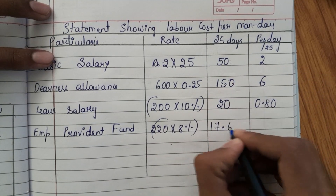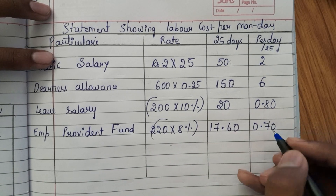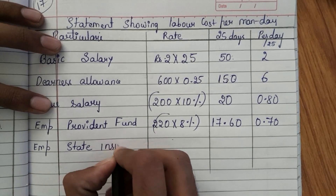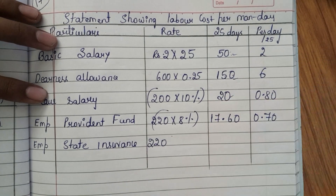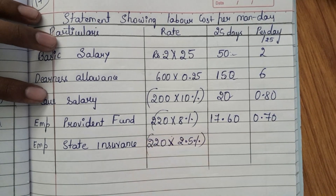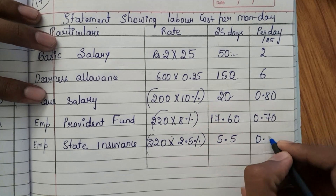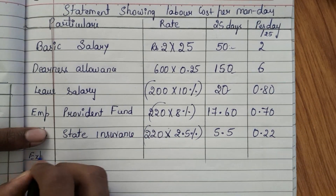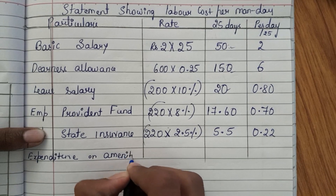Dividing 17.60 by 25 gives 0.70 per day. The next component is employer's contribution towards state insurance. It is 2.5% of the first three — meaning 50 plus 150 plus 20 equals 220. So 220 into 2.5% equals rupees 5.5 for 25 days. Dividing by 25 gives 0.22 per day.